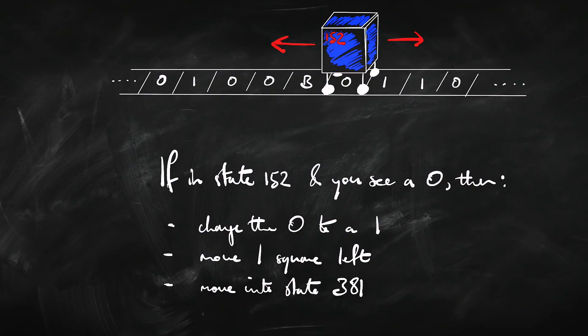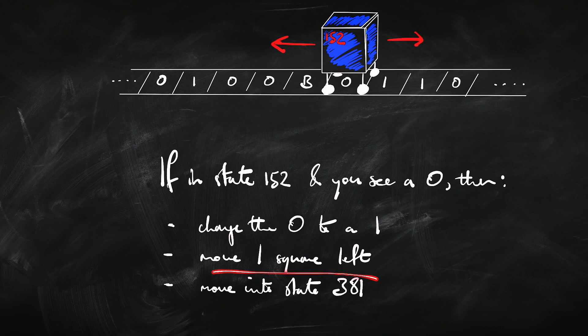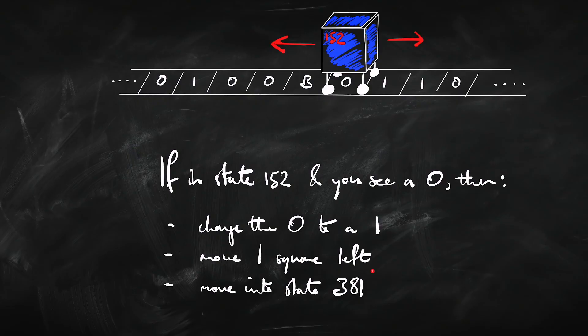So what does this machine do? It has a program, and the program has a number of instructions in it. They're basically super simple. They say things like: if you're in state number 152 and you're looking at a zero, then do the following things. Maybe you're going to change the zero to a one. The Turing machine can rub out and write new symbols on the tape. It can move left or it can move right. And then it can move into a new state. If we imagine this state as a big wheel with counters on it, you basically just move the wheel around until you're in state number 381 or whatever. Super, super simple.